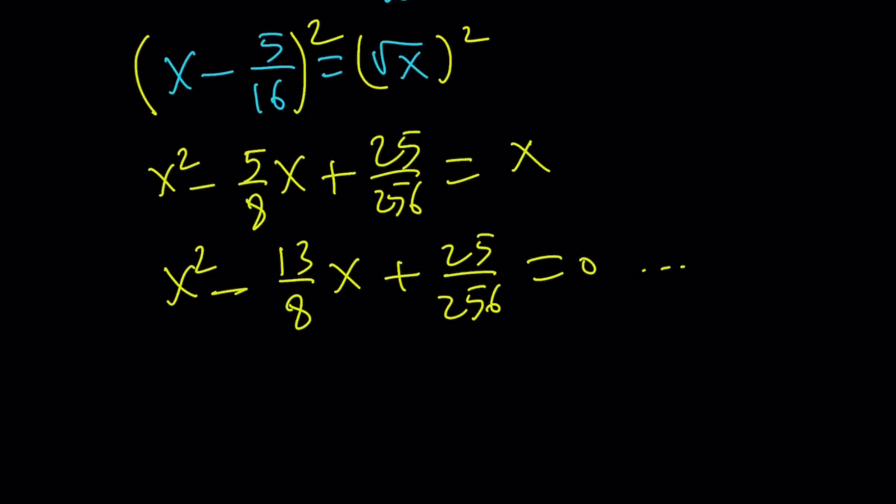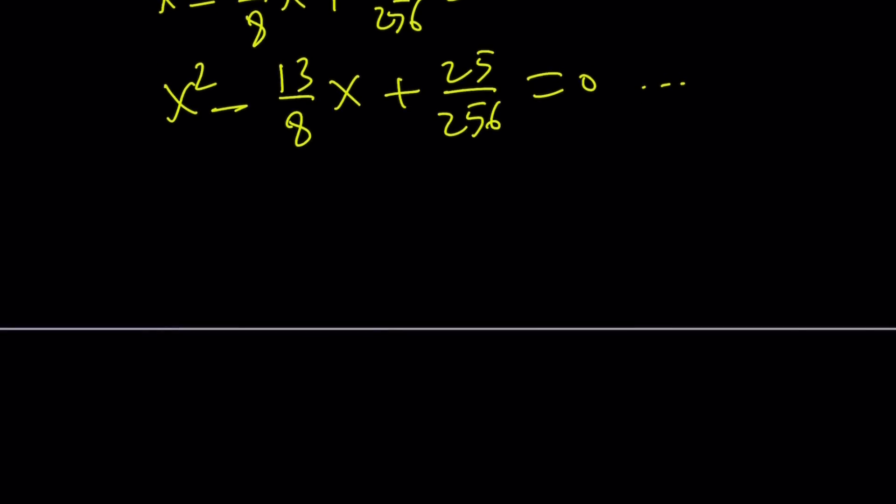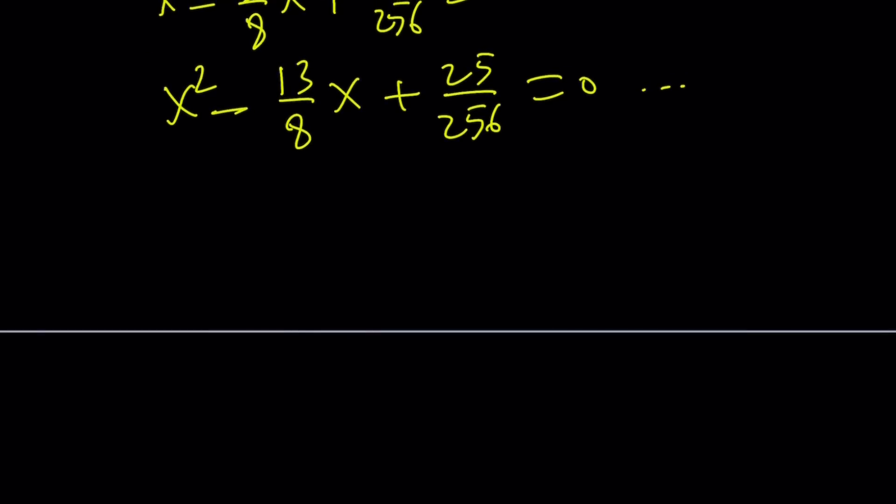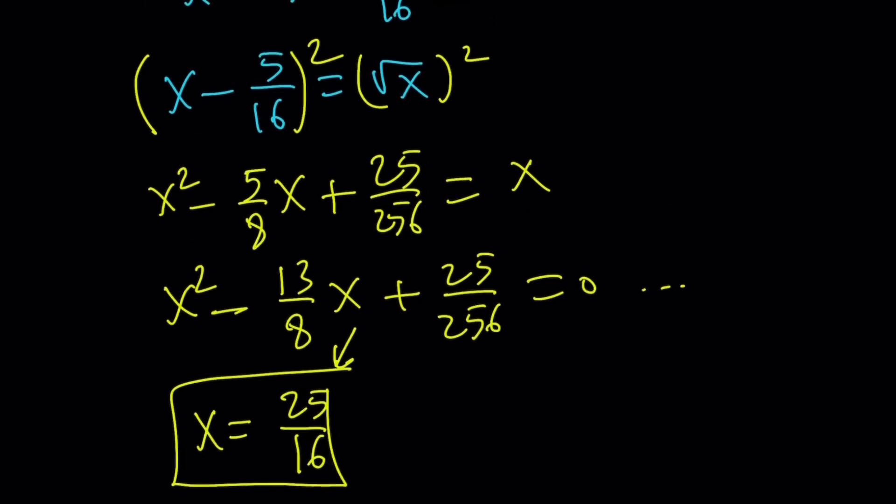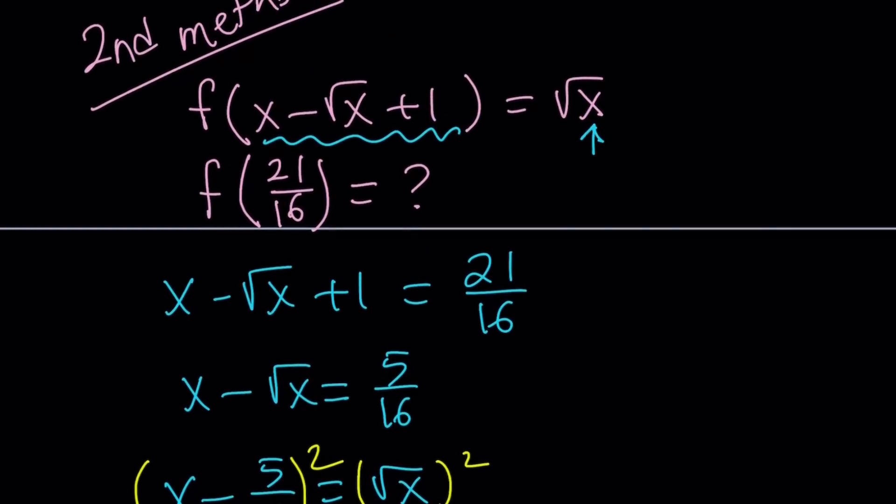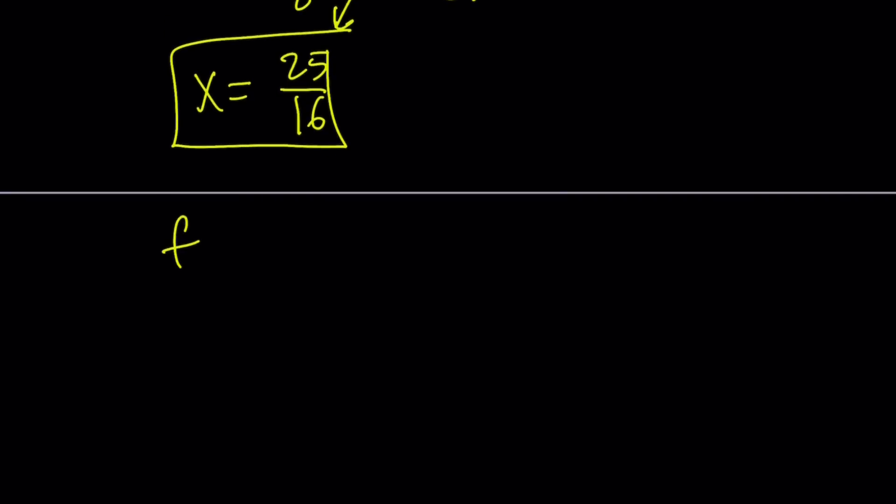When you solve for x, you're going to notice that x equals 25 over 16 from here. Just to spare you the trouble, I solved this equation for you. Now, remember we said that whatever the x value, we're going to substitute that on the right-hand side because we have f of x minus square root of x plus 1 equals square root of x, and we know that x is equal to this.